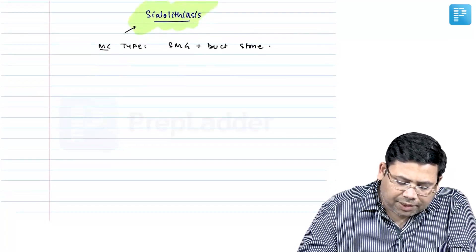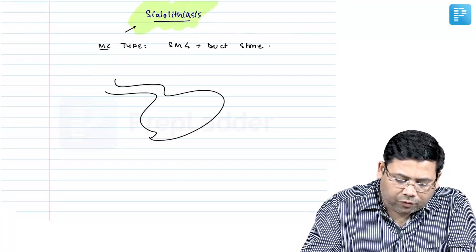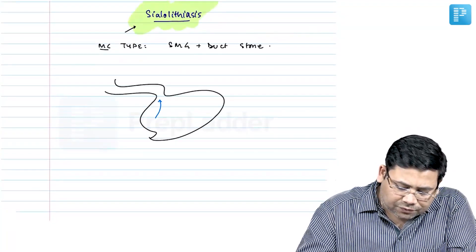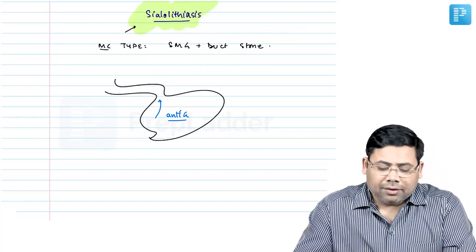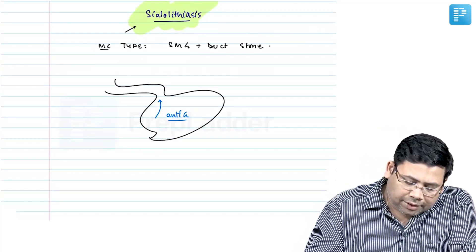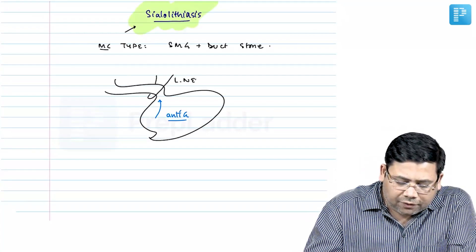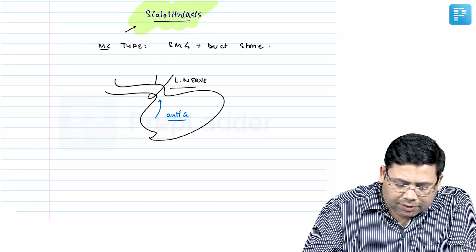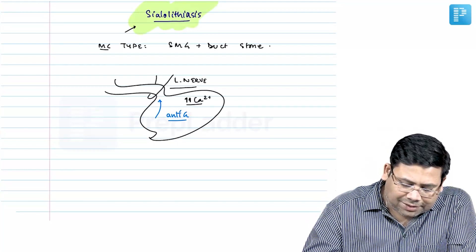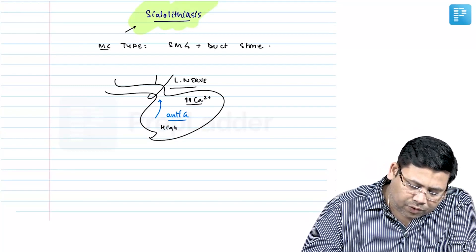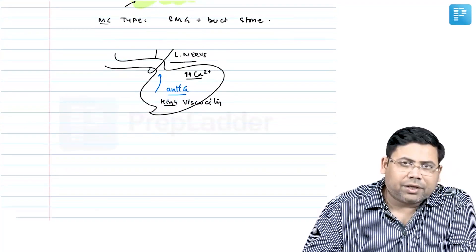Why is the submandibular gland a potential site for stones? The answer is: first of all, anti-gravity drainage. Second, the duct is hooked by lingual nerve. Third is rich calcium concentration. And fourth is high viscosity. So all these things actually favor the precipitation of stone.